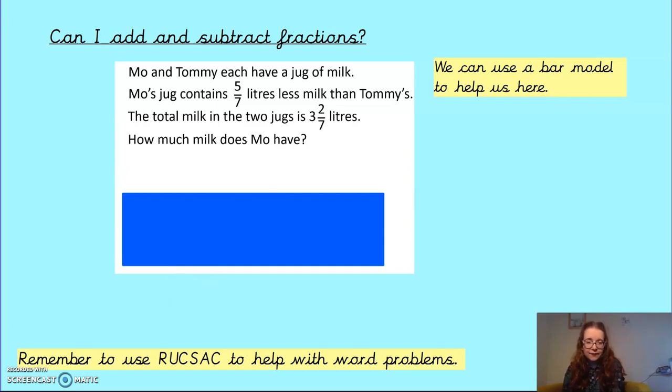Okay, so the key information here is, that's it, they each have a jug of milk. Moe's has 5 7ths litres less milk than Tommy's. The both milks all together have 3 and 2 7ths litres. So we need to work out how much milk is in Moe's jug. And I think to find that, we're also going to have to find out how much milk is in Tommy's jug. We know that all together they have 3 and 2 7ths litres.